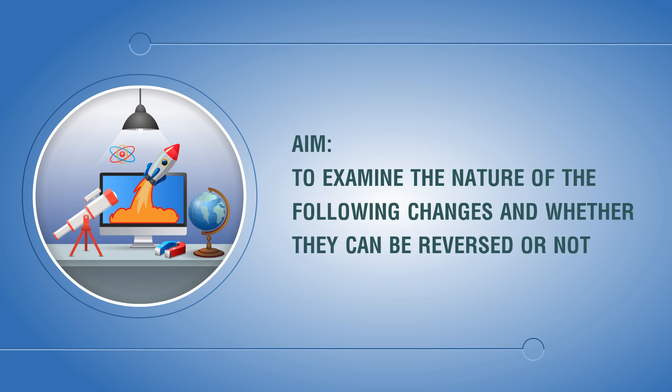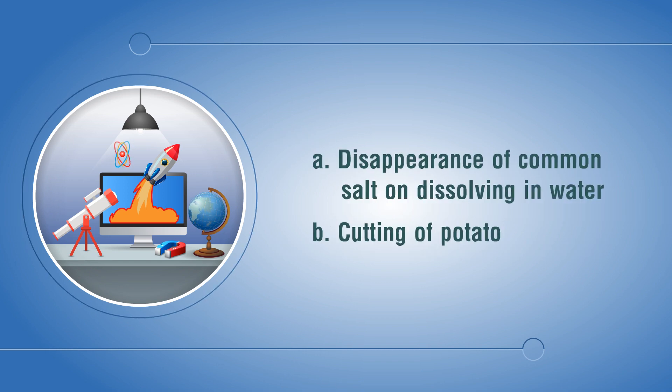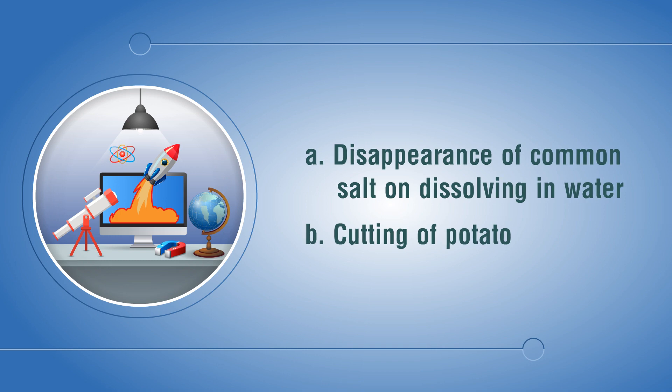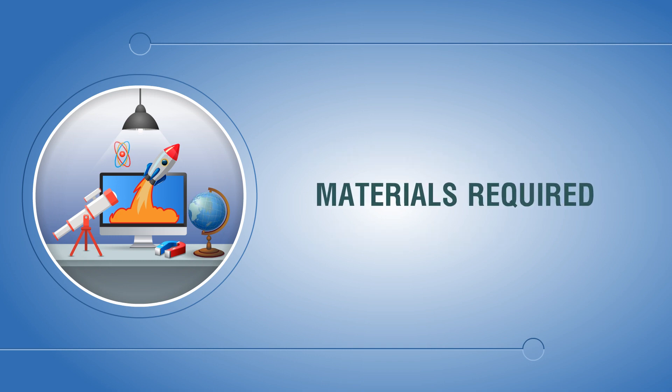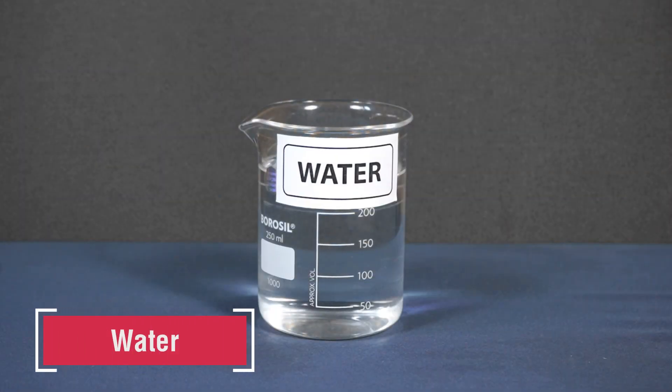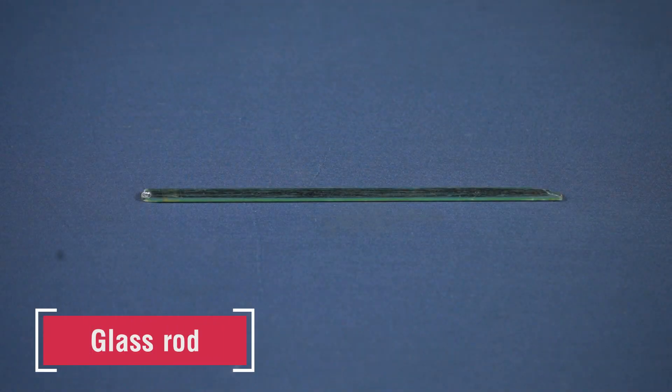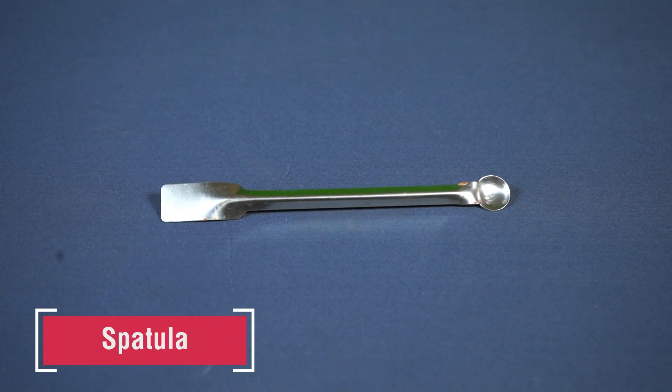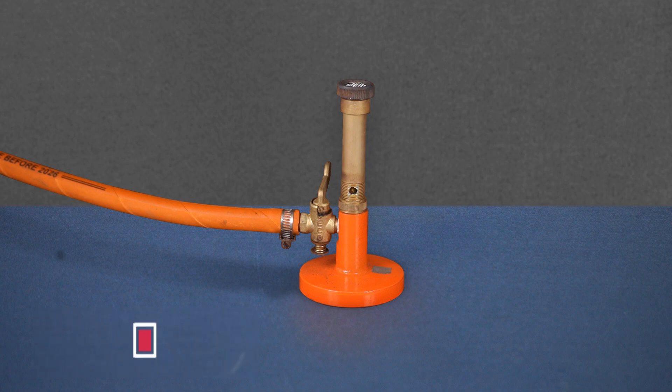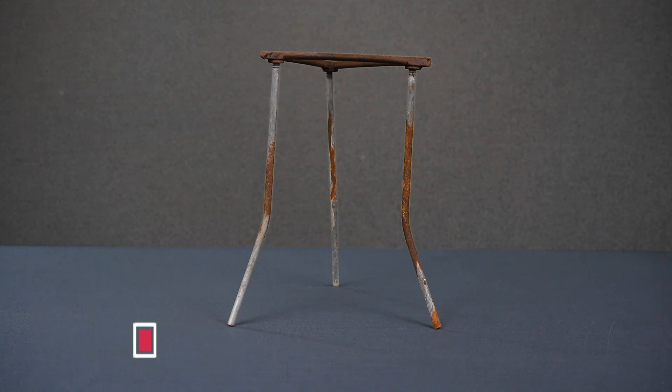Aim: to examine the nature of the following changes and whether they can be reversed or not. A: disappearance of common salt on dissolving in water. B: cutting of potato. Materials required: common salt, water, beaker, glass rod, spatula, Bunsen burner, wire gauze, tripod stands, potato, knife, matchbox.